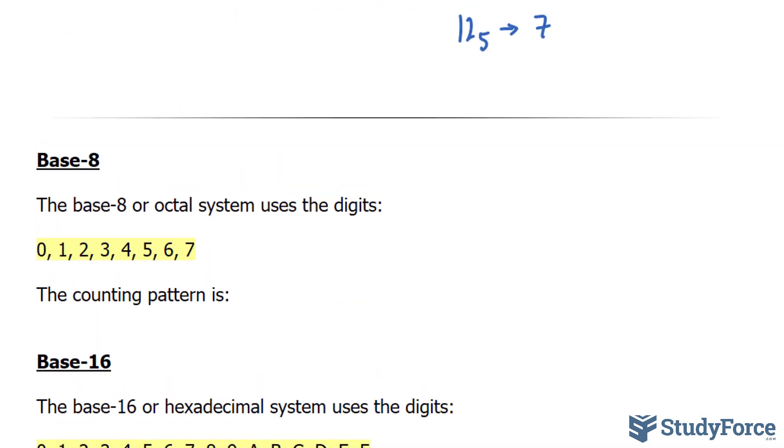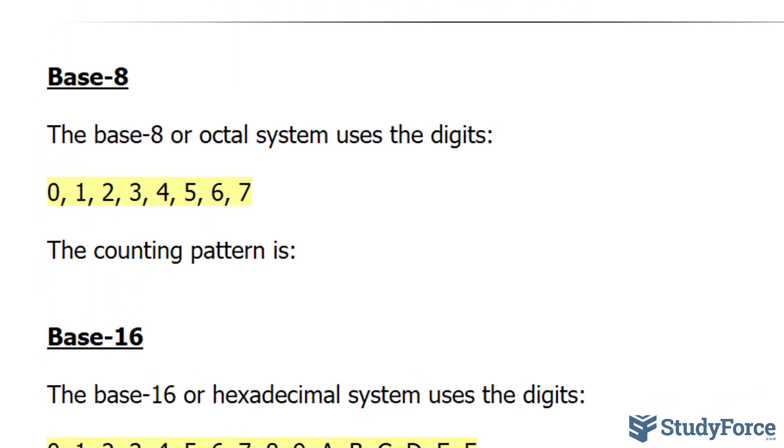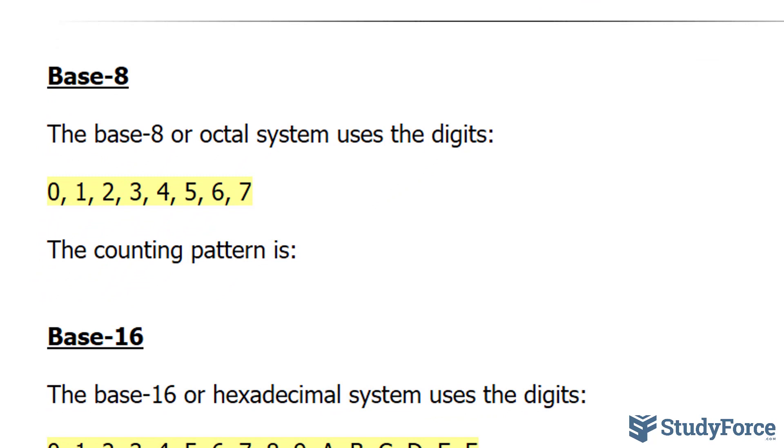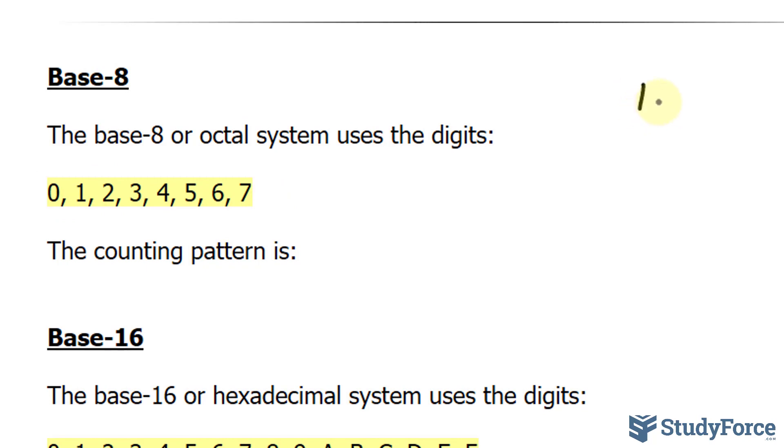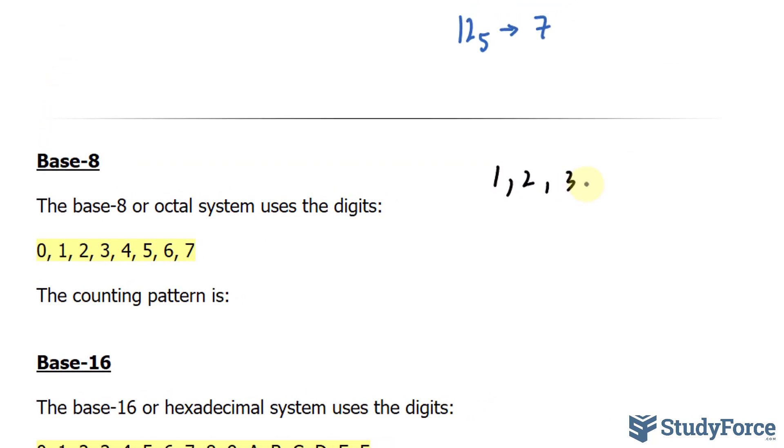Then we'll answer questions based on what we learned. The base 8, or octal system, uses digits between 0 and 7. We'll start by learning how to count in base 8. So since we can use digits from 0 to 7, I'll start with 1, 2, all the way to 7.